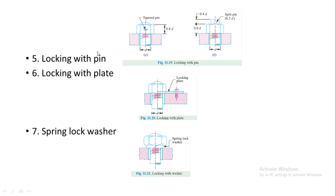Next we have locking with a pin, where a tapered central pin connects the bolt and the nut. Then we have locking with a plate, where a horizontal plate connects the bolt with the nut. Finally, we have the spring lock washer, where a separate washer is provided for a tight or leak-proof setting when a bolt and nut is used — this is similar to the washer already shown with the through bolt.